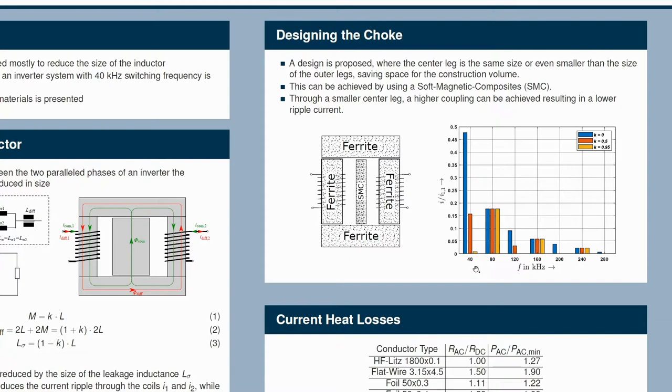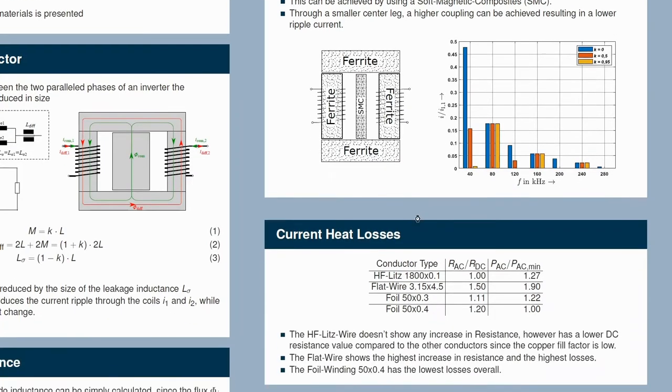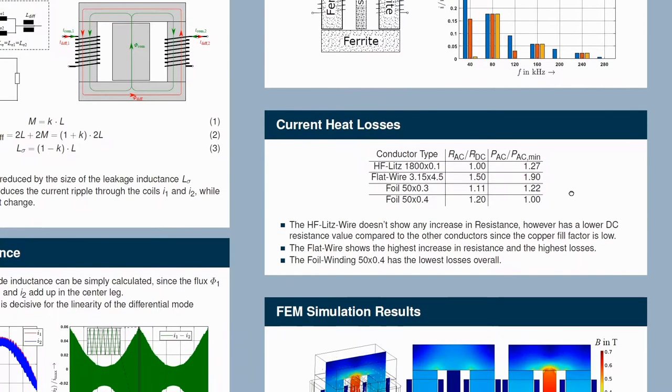So what we can actually see is that the current ripple is pretty high when we have an uncoupled inductor, and it decreases with a high coupling. So by reducing the current ripple, we have smaller current heat losses in the conductor because the skin and proximity effects are less. This has been looked at in the next section, the current heat losses.